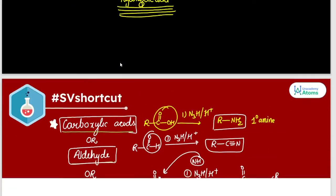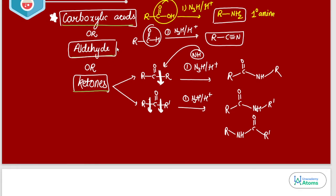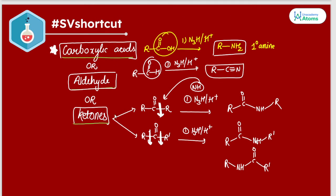After that, we are discussing carboxylic acids, aldehydes, and ketones from which we will be producing amines. It may be one degree or two degree. So from carboxylic acid, first of all, we will be producing amines from carboxylic acid.